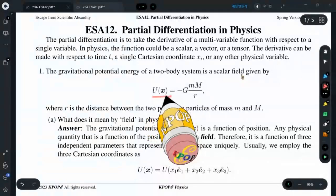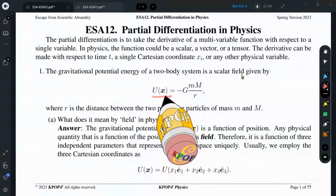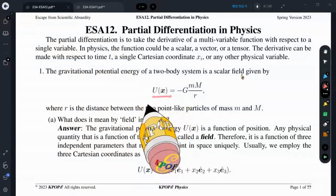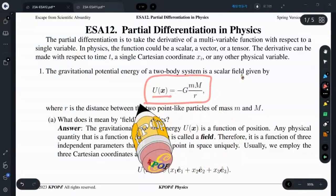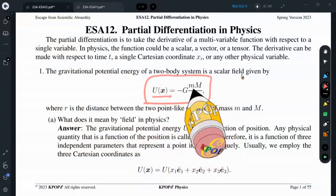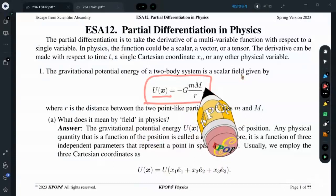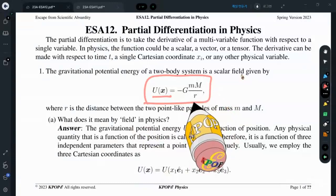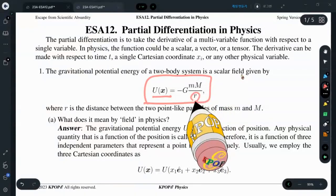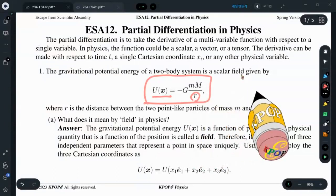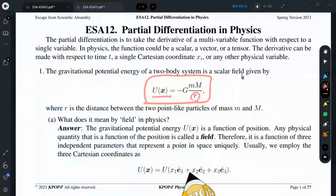Partial differentiation in physics. Partial derivative is necessary if you have a function that depends on many variables. For example, gravitational potential energy of a two-body system of mass m and M separated by distance r is a function of three Cartesian coordinates.